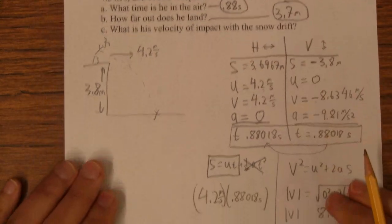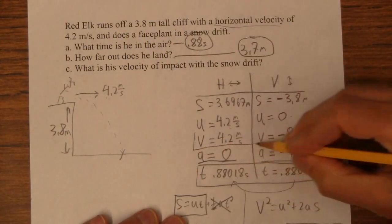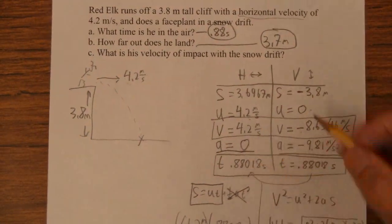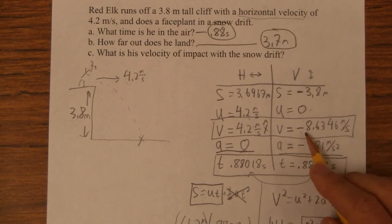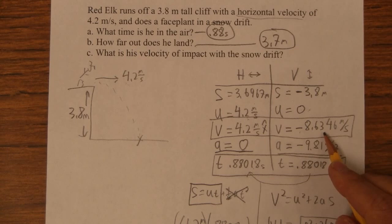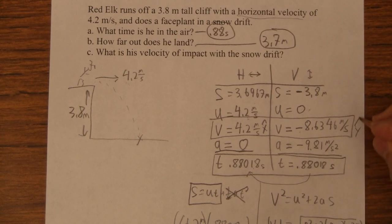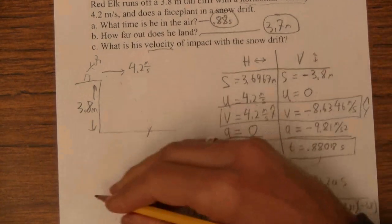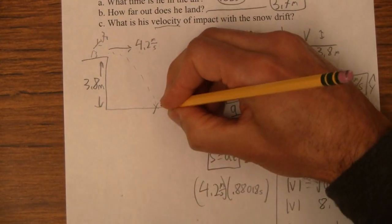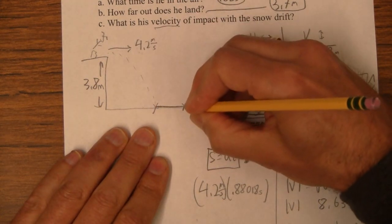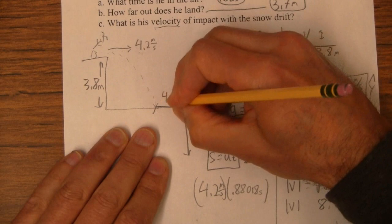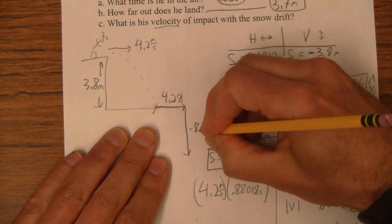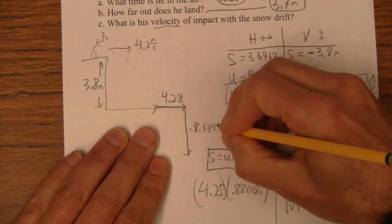And then velocity of impact with the snow drift, there's two ways I can answer that. I can say that it's 4.2 meters per second in the x direction, this would be a component vector, and negative 8.6 meters per second in the y direction. Or I can make, and probably if they say velocity, they want an angle magnitude vector. So let's make that angle magnitude vector. Right when he hits, right here, he's moving over and down. So it's 4.2 over, and down it's going to be negative 8.6346.